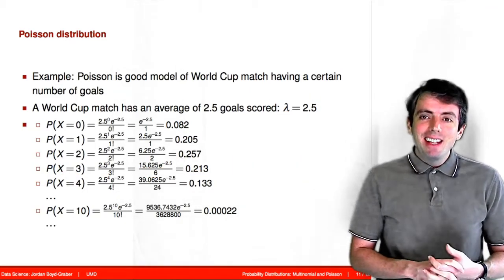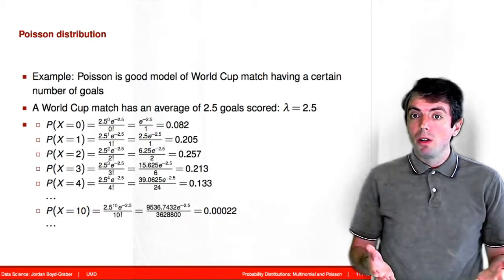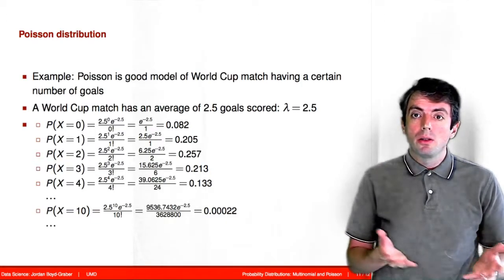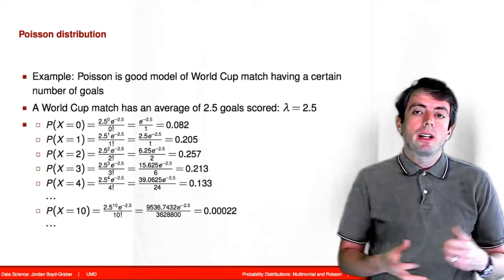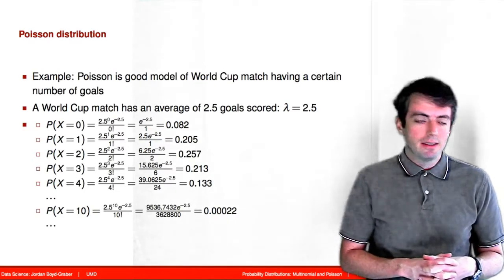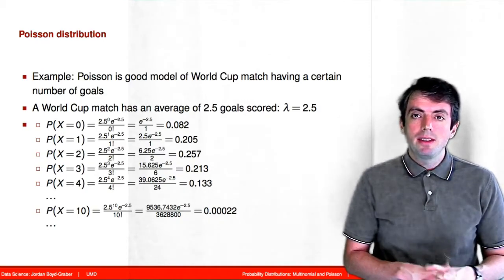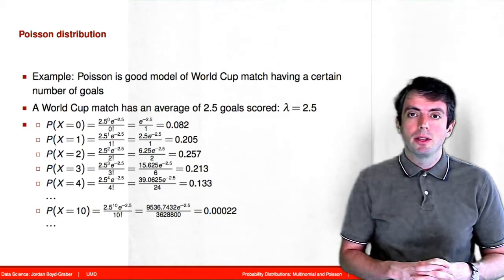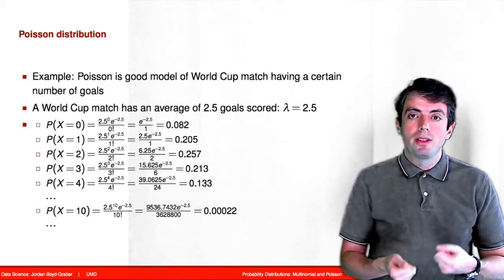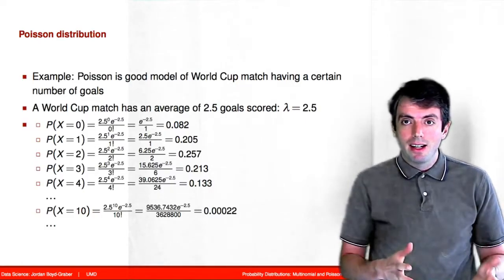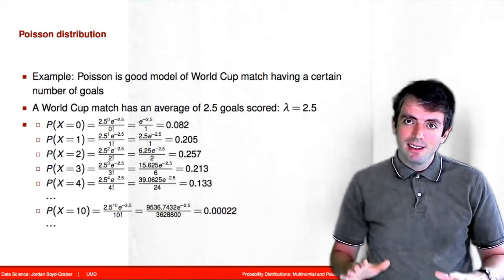We'll be talking about continuous distributions very soon, and we'll see other discrete distributions throughout the class. This serves as an introduction to the kinds of things we'll be seeing. This wraps up our discussion of discrete distributions. Next, we'll be talking about continuous distributions, and throughout the course we'll see a variety of new distributions that combine the concepts we've talked about here with other things later in the course.